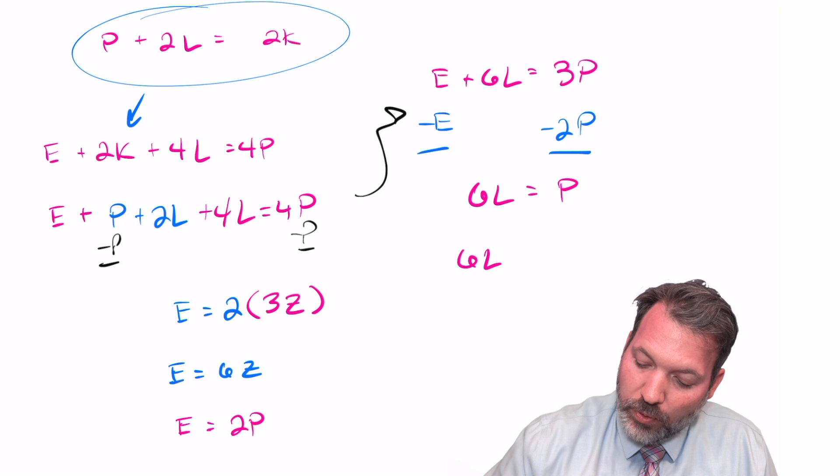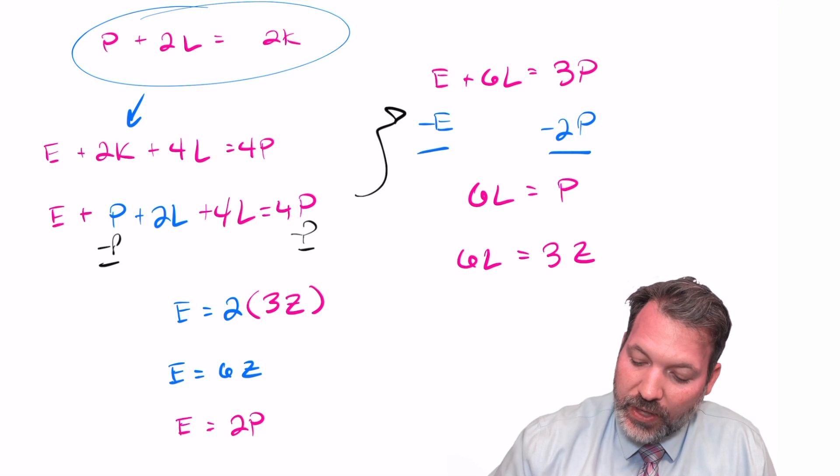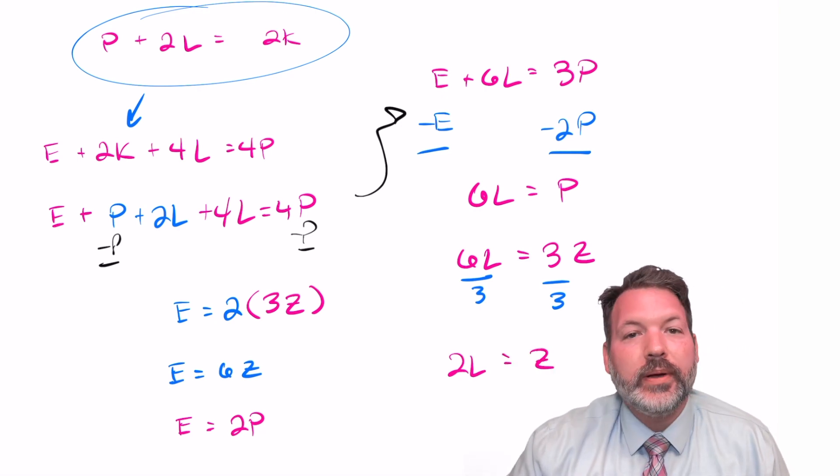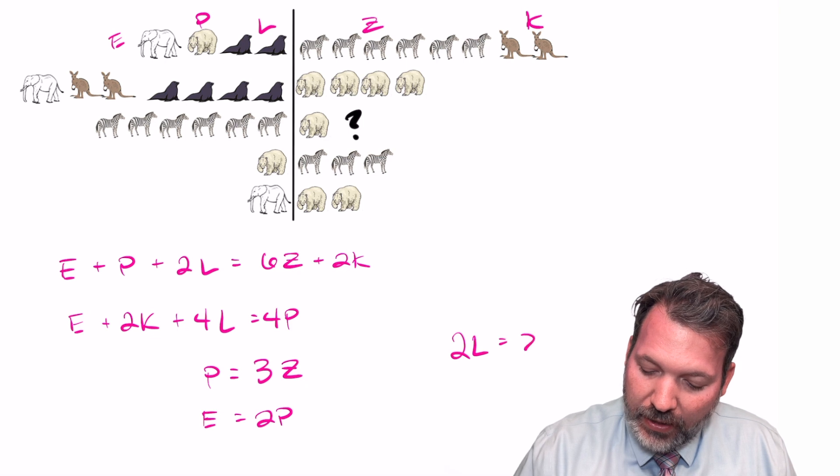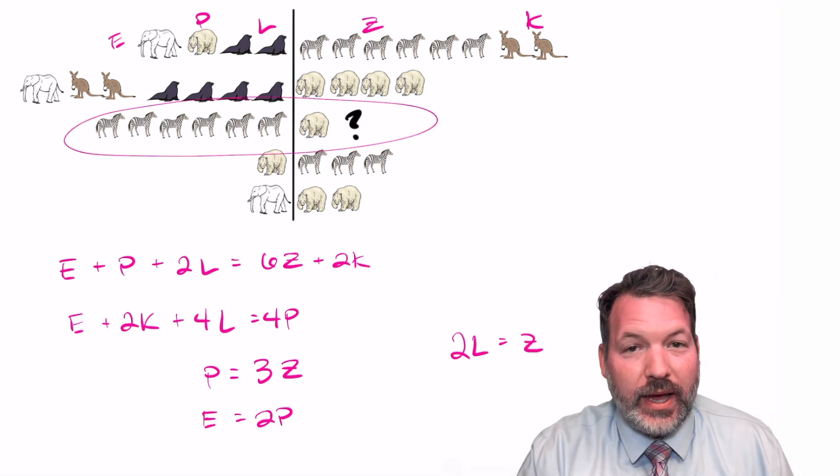Knowing that one P was the same thing as three Z, that was one of the original equations we started with, we once again get that same relationship that we saw earlier. If we divide both sides by three here, we get that two seals is equivalent to one zebra. And so we can once again come back over, we can go ahead and add that in, and we can now figure out what is going on with this third deck.